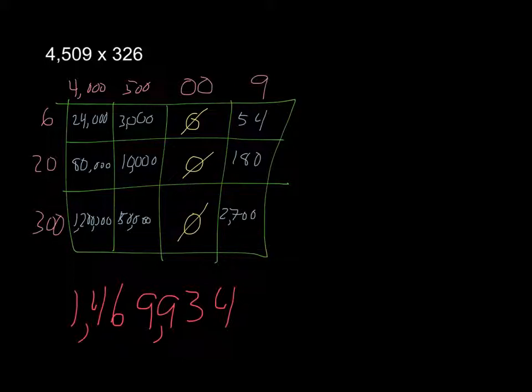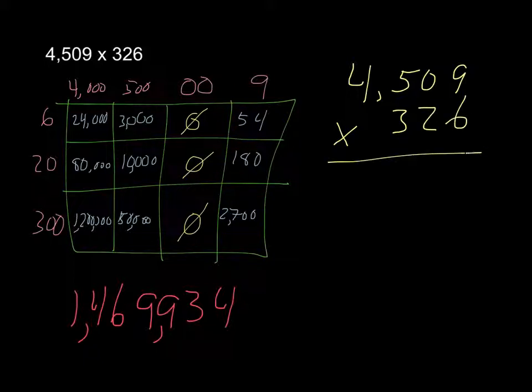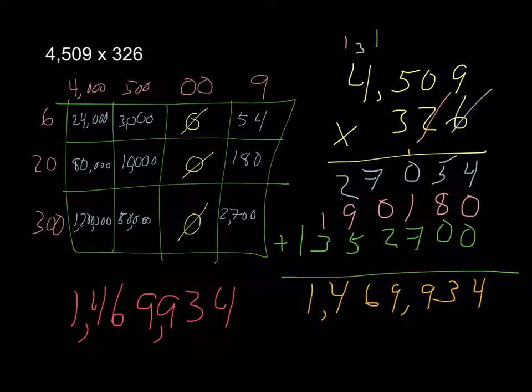And again, we can check our work by using the standard algorithm, where we are multiplying 4,509 by 326. And adding it, using the standard algorithm, adding everything together, we notice that we have the same exact solution, 1,469,934.